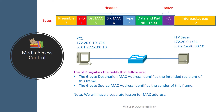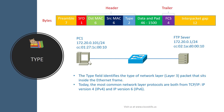The SFD signifies that the fields that follow begin with the six-byte destination MAC address, which identifies the intended recipient of the frame — in our example, the FTP server. After that comes the six-byte source MAC address, which identifies the sender of the frame — in our example, PC1. We will have a separate lesson dedicated to MAC addresses.